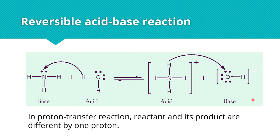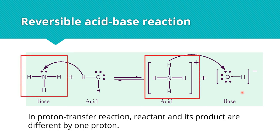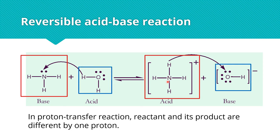This is a reversible reaction, so the products can react to produce the reactants. Looking at the product side: ammonium ion donates a proton to hydroxide ion to change back to ammonia, meaning ammonium ion acts as an acid and hydroxide ion acts as a base. You can see that the reactant and its corresponding product differ by one proton: ammonia has three hydrogens while ammonium ion has four, and water has two hydrogens while hydroxide ion has one.